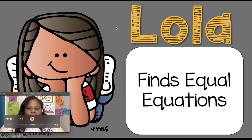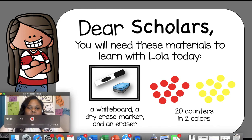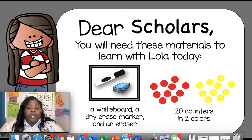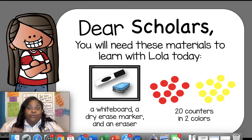Alright first grade, this is Lola and we are going to be finding equal equations. You will need these materials: a whiteboard, a dry erase marker, and an eraser. You may also use a piece of paper and a pencil. We're also going to need 20 counters in two different colors — things around your house like crayons, markers, pennies, dimes, or macaroni noodles. If you don't have counters, just follow along and I'll show you the counters on the screen.